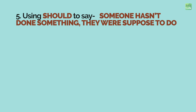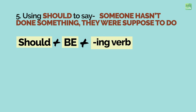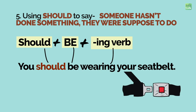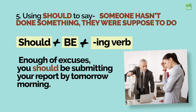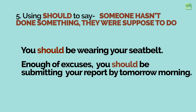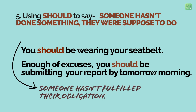Such sentences are formed using Should + be + verb in the ING form. 'You should be wearing your seat belt' — the person is not wearing one right now; you are asking them to behave sensibly. 'You should be submitting your report by tomorrow morning' — the boss is asking you to be responsible and submit the report. In both sentences, someone has not fulfilled their obligation. Those were the five uses of Should.